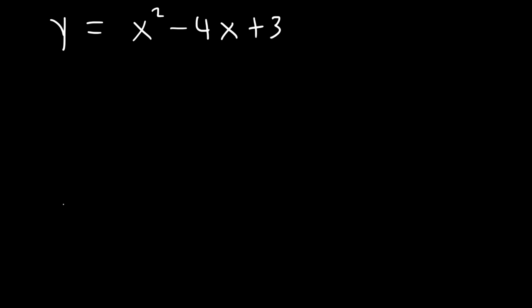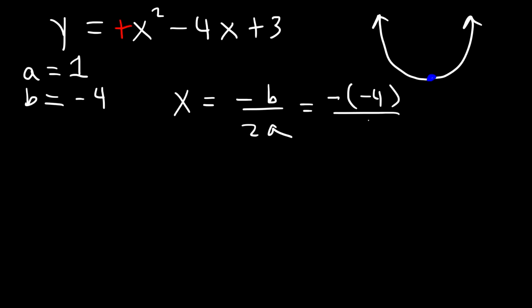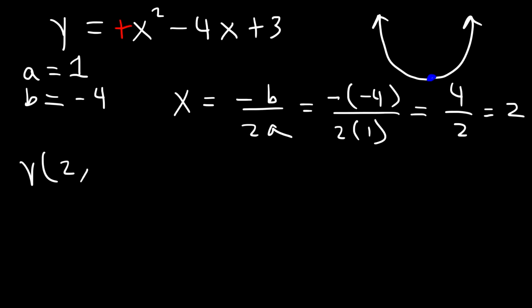Let's say we have the quadratic equation y = x² - 4x + 3. Because this is a positive x² term, the parabola opens upward. To find the x-coordinate of the vertex: a is 1 (the coefficient of x²), b is -4 (the coefficient of x). So x = -(-4) / (2×1) = 4/2 = 2.